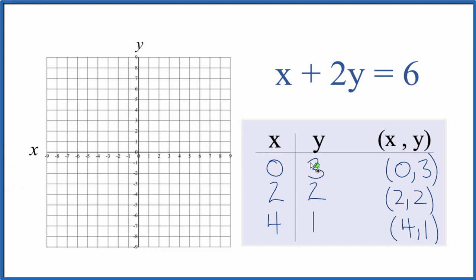So we go x is 0, y is 3. Here's x is 0, and we go y is 3. That's the y-intercept. And then we have 2 for x right here, and y is 2. And our last point, x is 4, y is 1. So 4, 1. And you can see we have a line there.